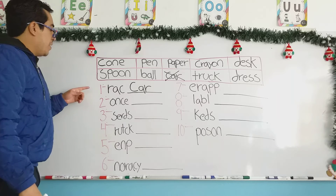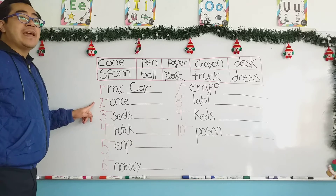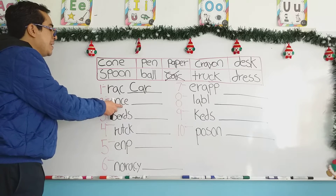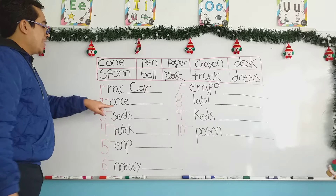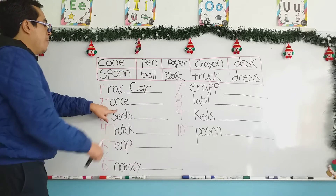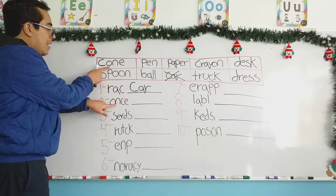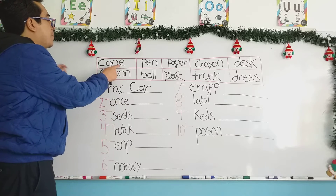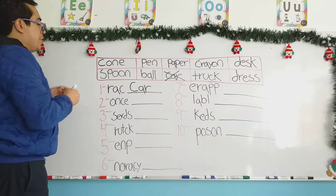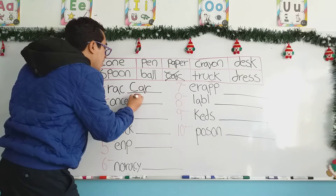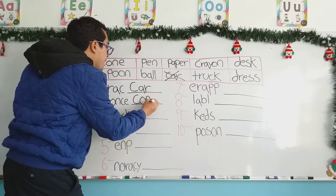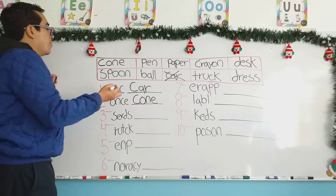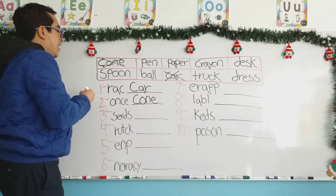We continue with number two. The letters are O, N, C, and E. Let's look at the first rectangle — letter O, letter N, letter C, and letter E. So this is the correct order of the letters, and the word is cone. Cone in Spanish, cono. We mark it with an X.